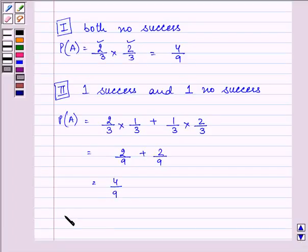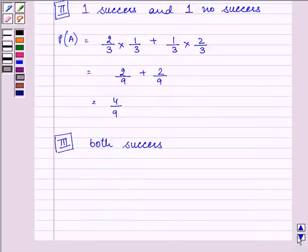And lastly, the possibility that both times success happens. So, it is equal to 1 by 3 into 1 by 3, that is 1 by 9.